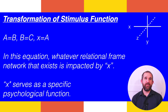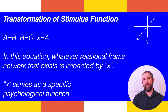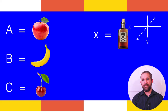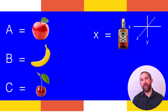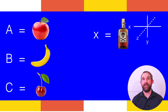The third component is transformation of stimulus function, and this is arguably one of the most crucial components of language and cognition, as it is the means by which language influences behavior. The equation is: A equals B, B equals C, X equals A. Whatever relational frame network exists is impacted by X, which serves as a specific psychological function. For example, with a fruit basket containing apples, bananas, and cherries, if we know X is poison and it's been introduced to the apples, this transforms the relational network and influences whether we eat from that basket. Transformation of stimulus function is an incredibly powerful phenomenon.